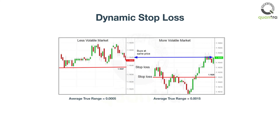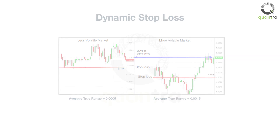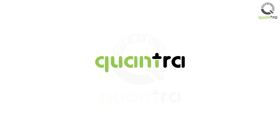This is called a dynamic stop loss. Let us look at an example where we are trading euro to US dollar at the same price, but with different volatilities — the corresponding stop losses are as shown here. For this video, we will end here. We will see you soon.